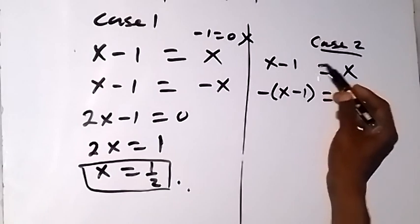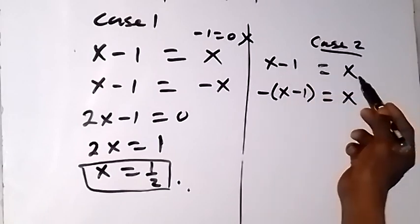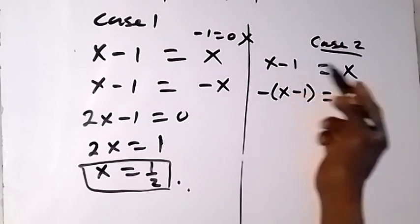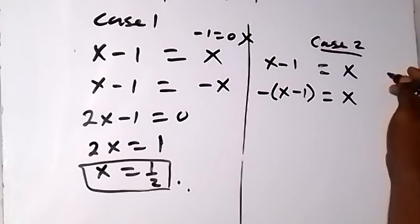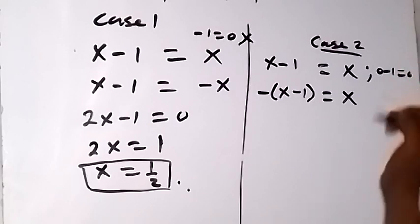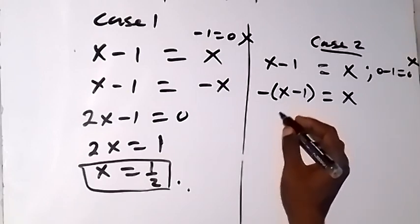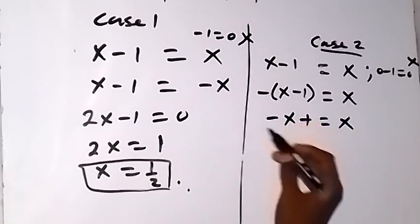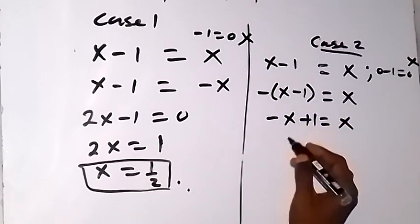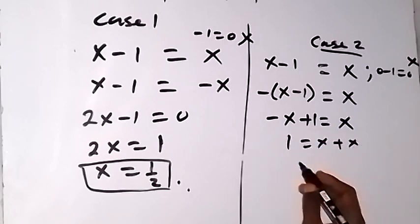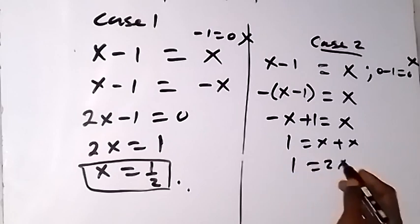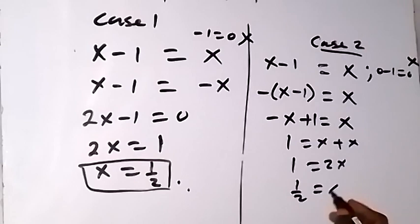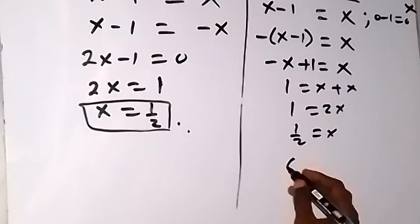On this side as well, when we check — subtracting x from both sides, we have x minus x equals zero, so we get 0 minus 1 equals zero, which means 0 equals 1. So this one too is not valid; it's not a valid solution. Then, when we solve the second one, we have minus x plus 1 equals to x. Taking minus x to the other side, we remain with 1 equals to x plus x, which is 2x. So we have 1 equals to 2x, divide both sides by 2, and then we have 1 over 2 equals to x, which is the same solution: x equals to half.